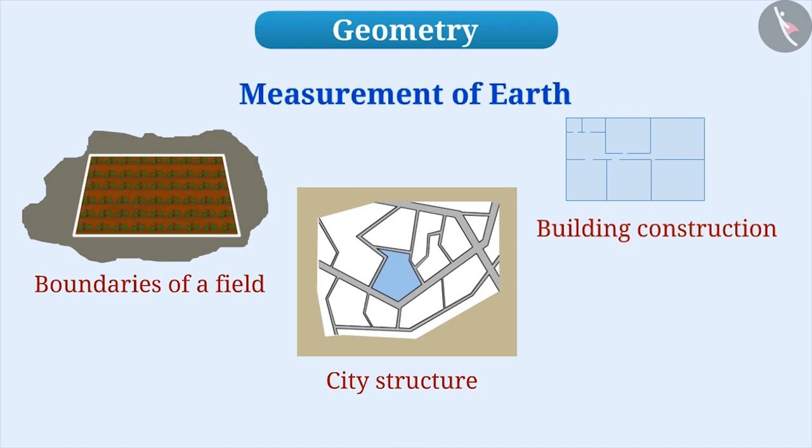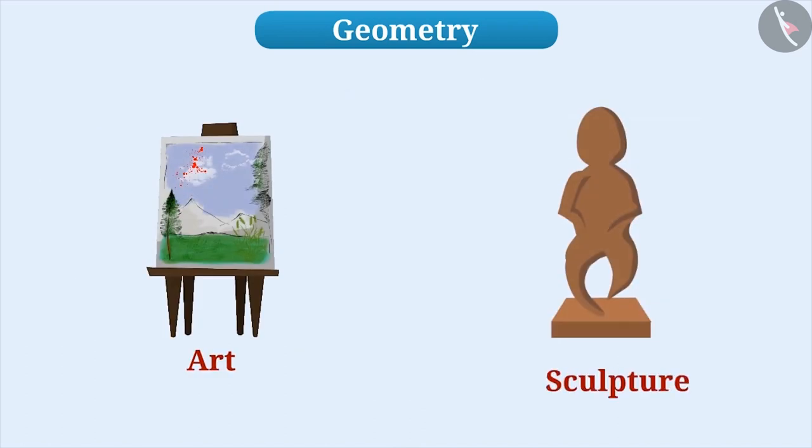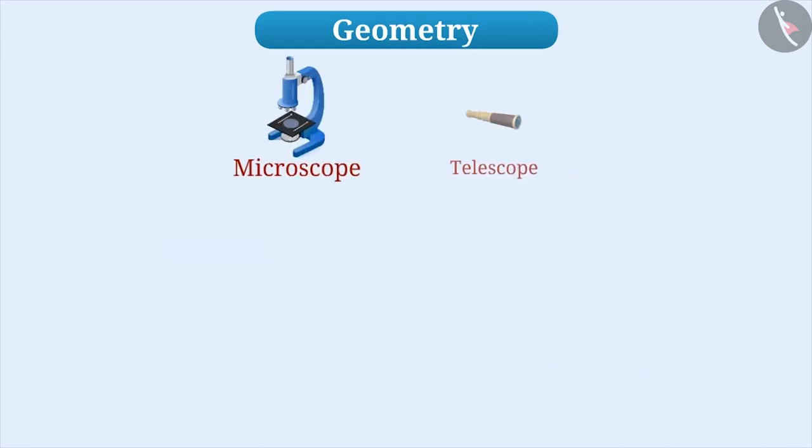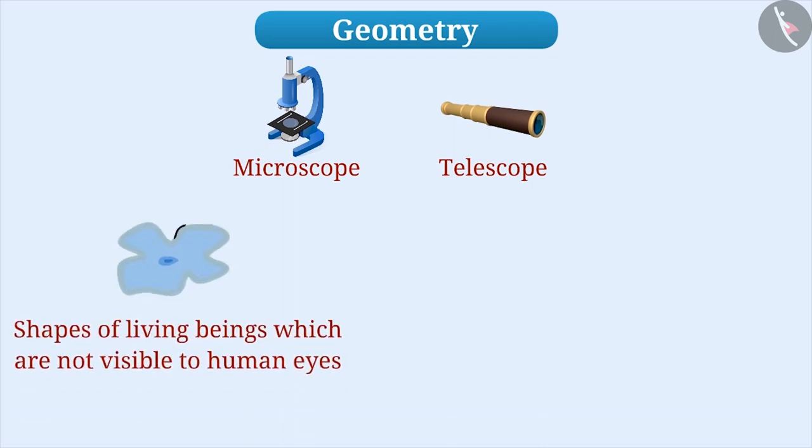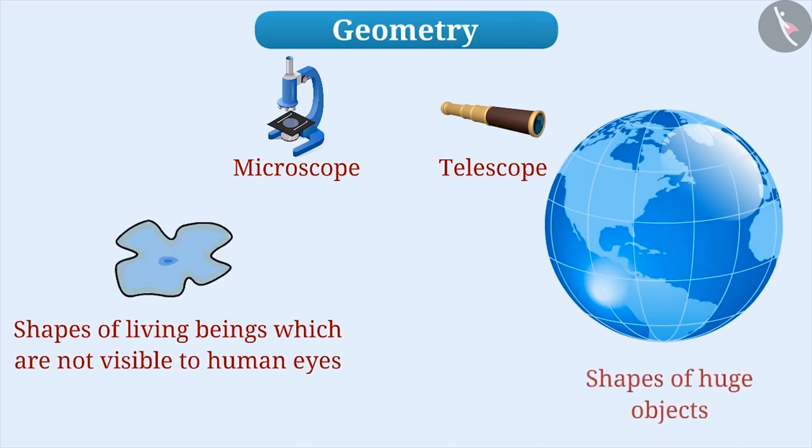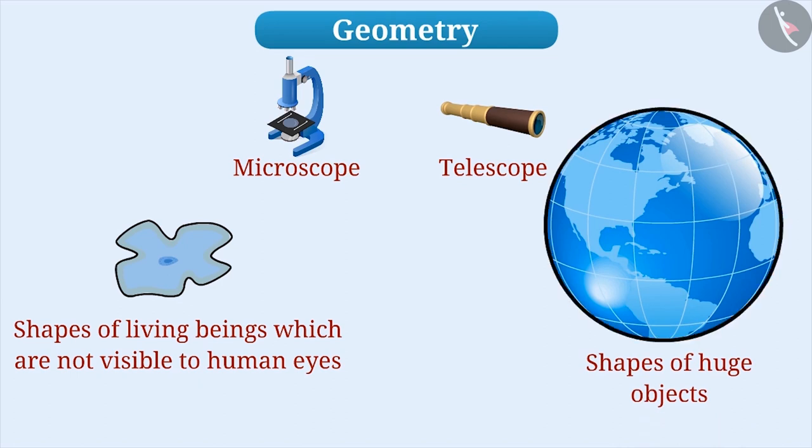Geometry was not limited to measuring earth. Geometry developed along with the growth of art forms such as painting and sculpture. Today's geometry has become so advanced that with the help of modern tools, we are able to see tiny objects which are invisible to our eyes as well as huge objects in our universe.